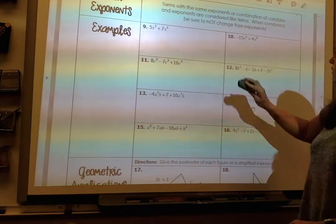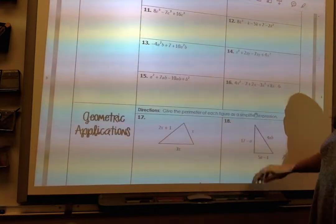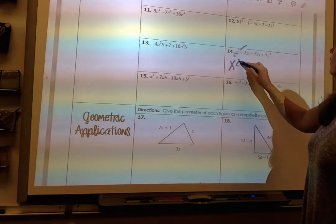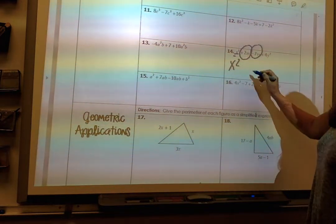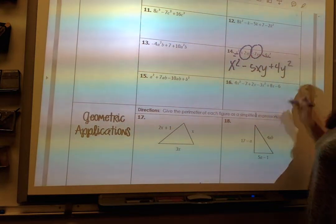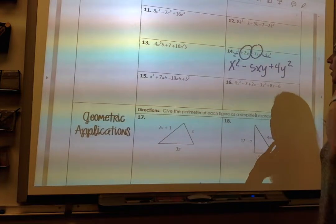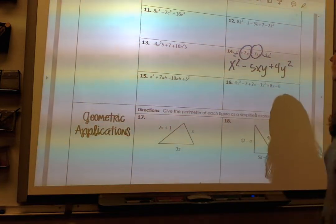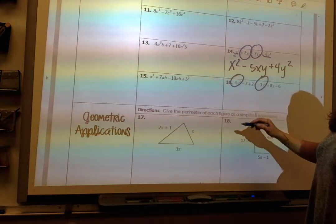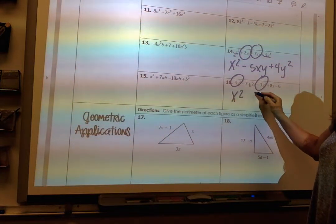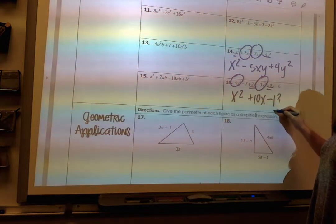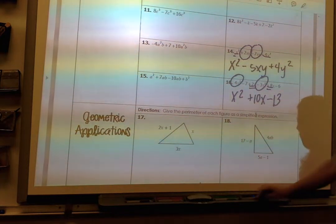So I'm going to finish out 14 and 16. So I have x squared, I've got 2xy and negative 7xy, which is a negative 5xy, and then I've got this positive 4y squared. That's my answer for 14. If you want to pause and then check, that's probably a good way to do this as well. So I've got 4x squared and a negative 3x squared, which gives me x squared, plus 10x, minus 13. That's my answer for 16.